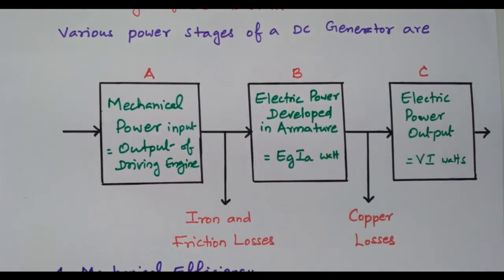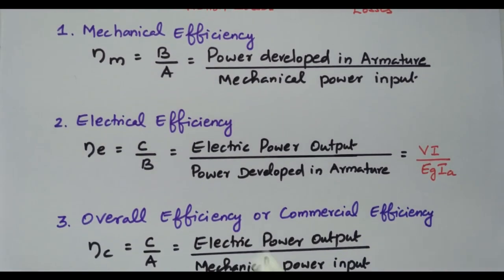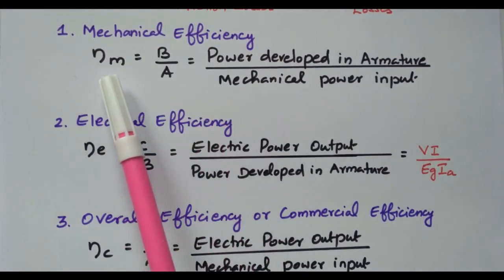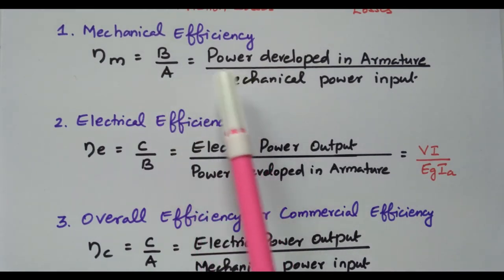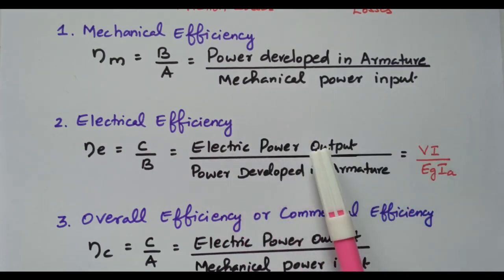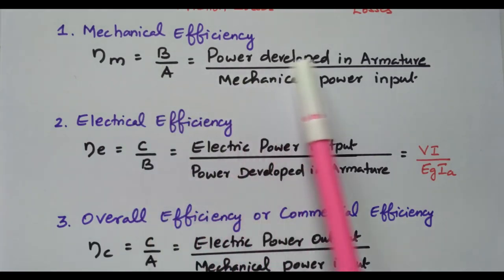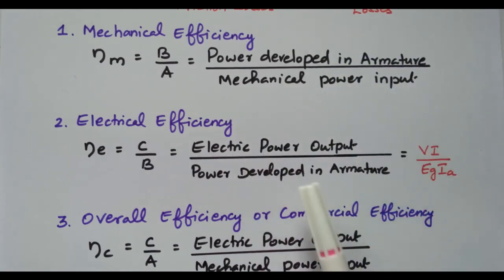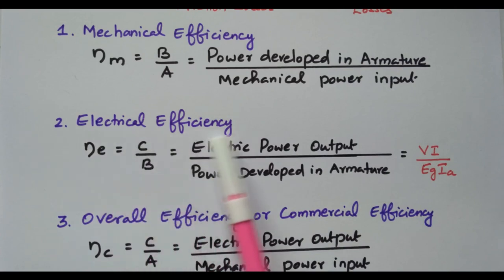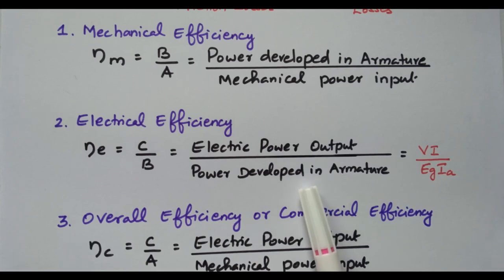Based on the three stages A, B, and C, we can determine the various efficiencies of the DC generator. The mechanical efficiency is given by B divided by A — second stage divided by first stage — which is the power developed in the armature divided by mechanical power input. The electrical efficiency is C divided by B — third stage divided by second stage — which is electrical power output divided by power developed in the armature.